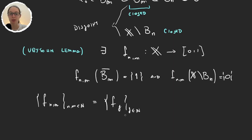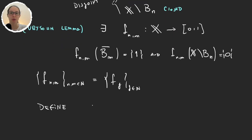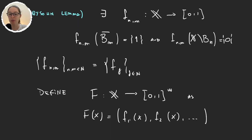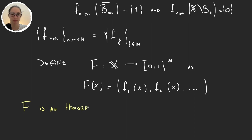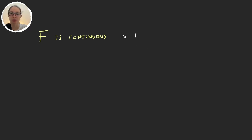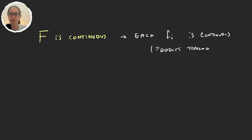Now that we have defined this sequence of functions, we define f: X → [0,1]^ω by f(x) = (f₁(x), f₂(x), …). This function f is a homeomorphism onto its image. To prove this, we need several things. The first — that f is continuous — follows immediately because each fᵢ is continuous and we are working with the product topology.